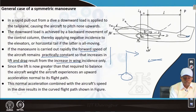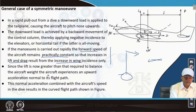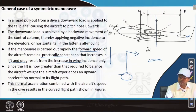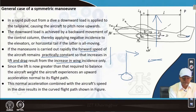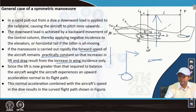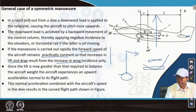Since the lift is now greater than that required to balance the aircraft weight, the aircraft experiences an upward acceleration normal to its flight path. This normal acceleration combined with the aircraft speed in the dive results in the curved flight path shown in the figure. The aircraft is coming down, then the pitch-up movement is given, and then it follows the curved path — only this portion is shown in this case.